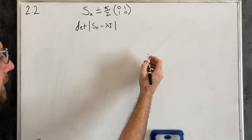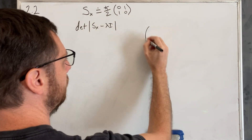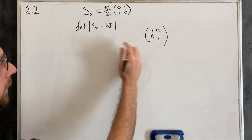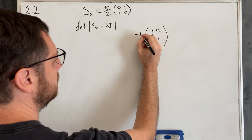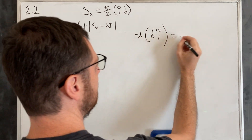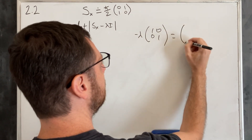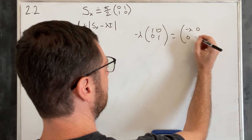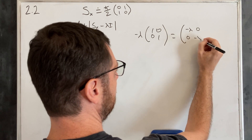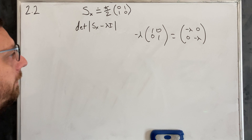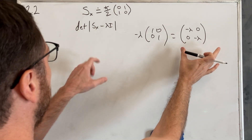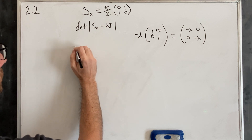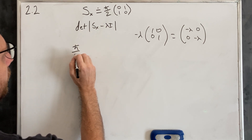The identity matrix for a 2×2 would be [1, 0; 0, 1]. So negative lambda times the identity matrix equals [-λ, 0; 0, -λ]. And if we were to add that to the SX matrix, we would get ℏ/2.